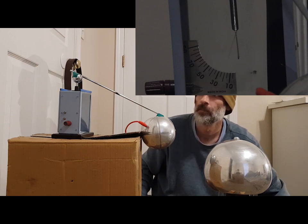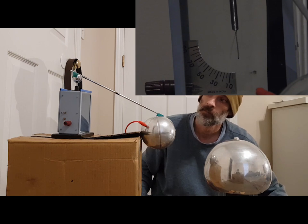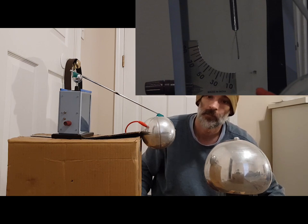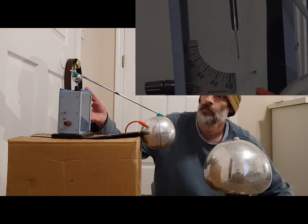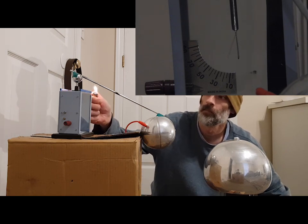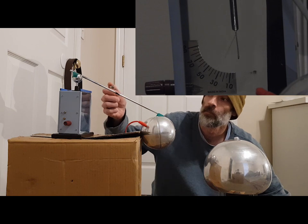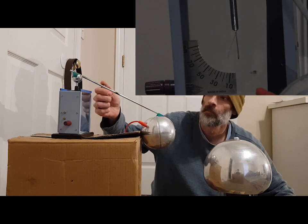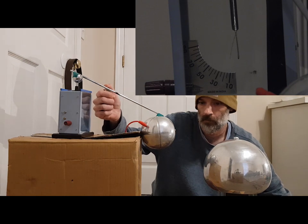As you can see when I start turning the Van de Graaff generator, the gold foil leaf starts pushing away and going off in an arc. Now when I apply a flame there, you can see that it over doubles in size that time. You can see the amount of electricity that the electroscope is gathering.